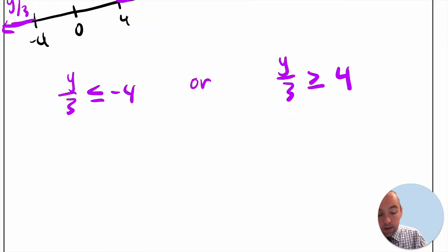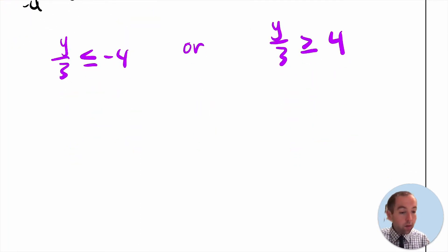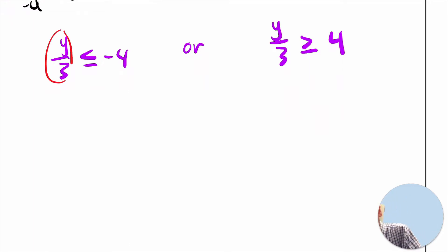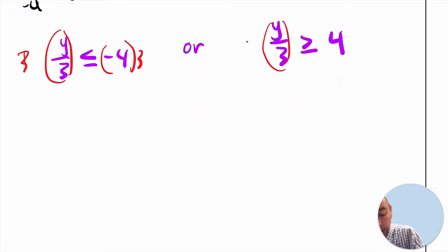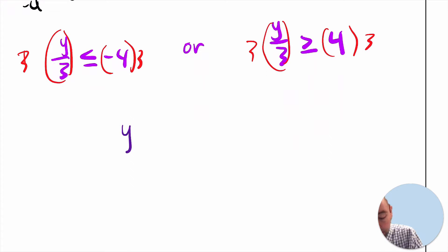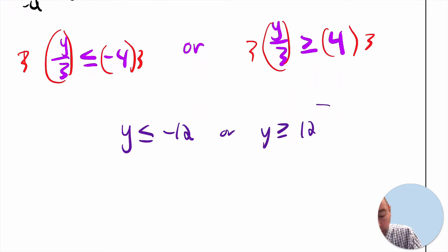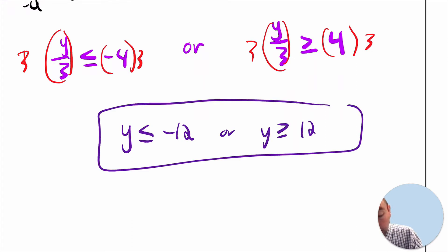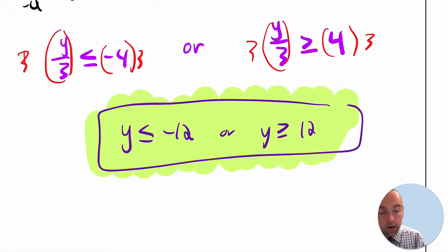With this compound 'or' inequality, we solve each simple inequality separately. We just need to multiply by 3 for both. Since we're multiplying by a positive, we do not flip the inequality symbols. We end up with y less than or equal to negative 12, or y greater than or equal to 12, as the possible values for y.